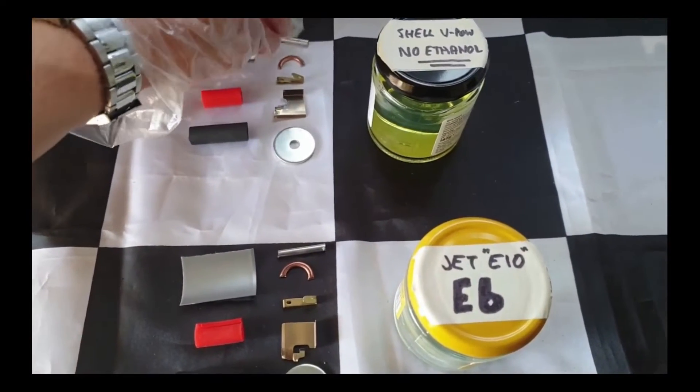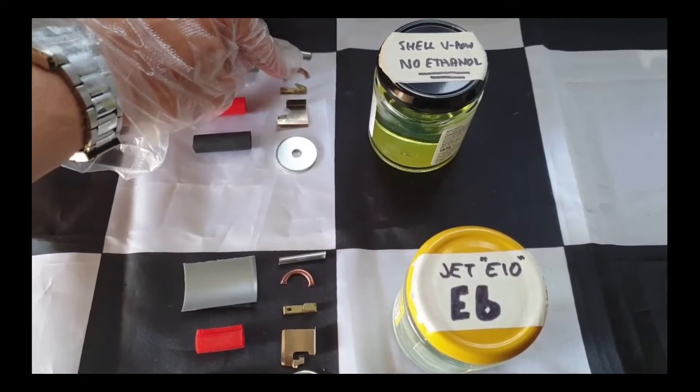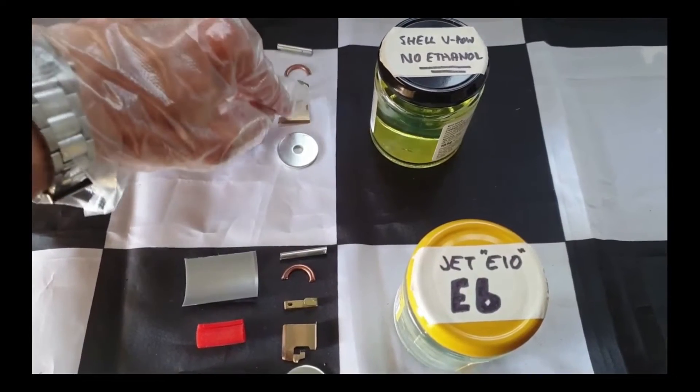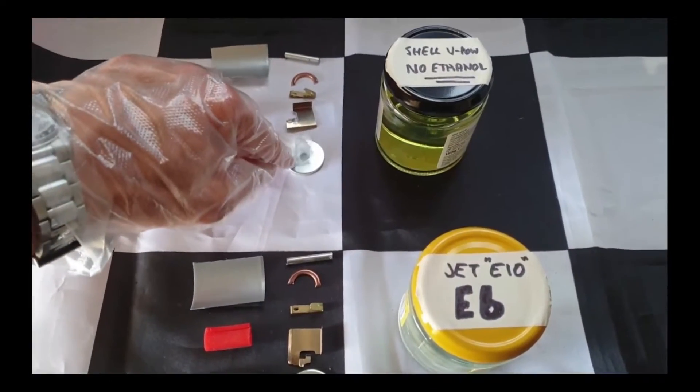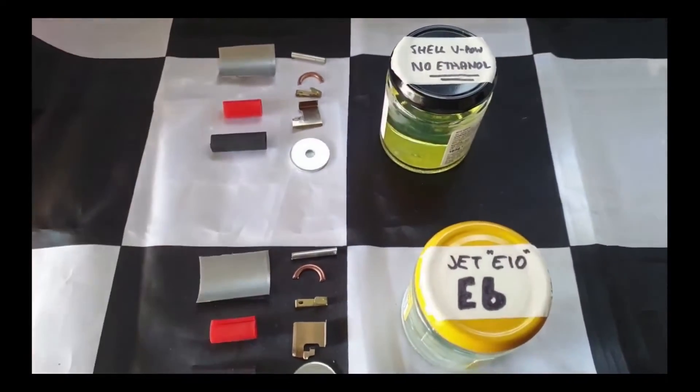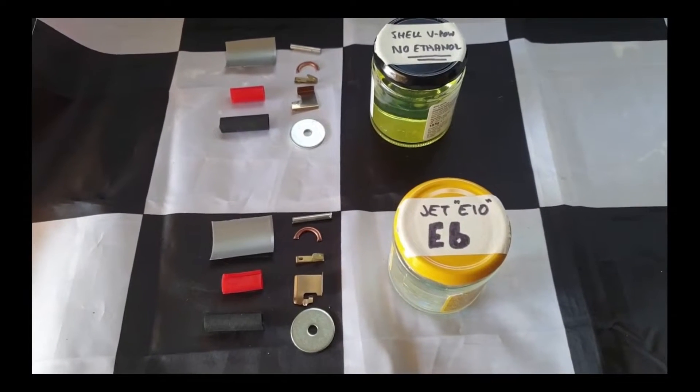Our various metals are aluminium, copper, brass, stainless steel, zinc plated mild steel, all the things you might find in carburetors and fuel tanks over the years.